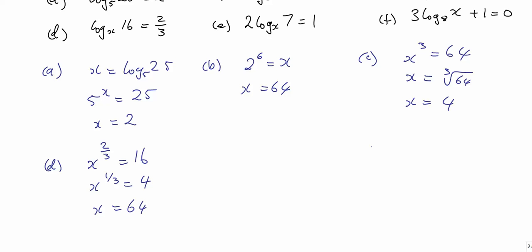2 log 7 to base x is 1. We'll divide by 2 to get log 7 to base x is 1 half. Writing that, x to the power of a half equals 7, so the square root of x is 7. Squaring both sides, x is 49.